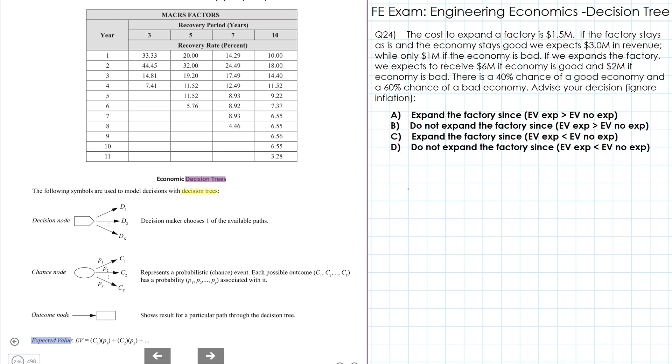So the decision that we are trying to make is either to expand or not to expand the factory. So here we have our decision node. Expand or not. So if we expand, it will cost us $1.5 million. And if we did not expand, it will cost us nothing.